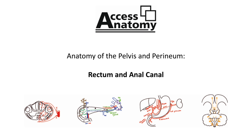The external anal sphincter is a broader, voluntary muscle made up of striated fibers. It is located on either side of the inferior two-thirds of the anal canal, attached anteriorly to the perineal body, posteriorly by the anococcygeal body, and superiorly it blends with puborectalis of levator ani. As this sphincter is formed from striated muscle, it is under voluntary control and is therefore innervated by the somatic nervous system — specifically by the inferior rectal nerve, which is a branch of the pudendal nerve.